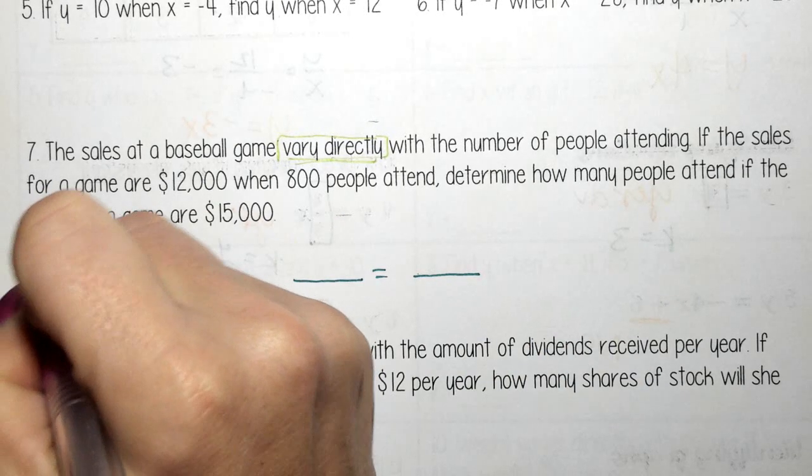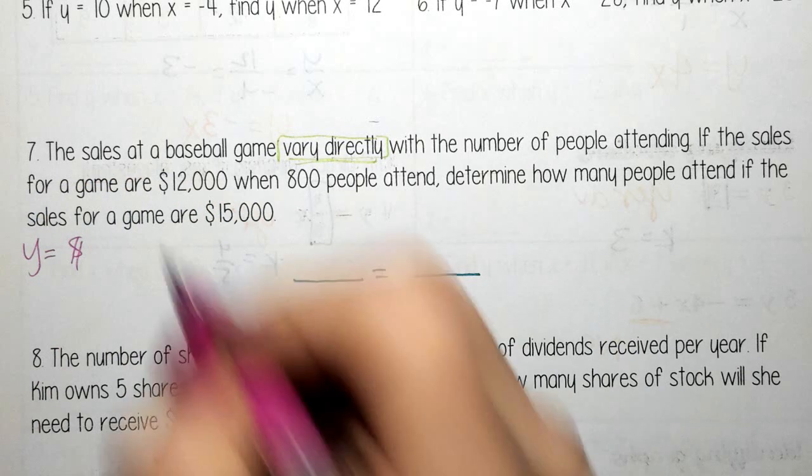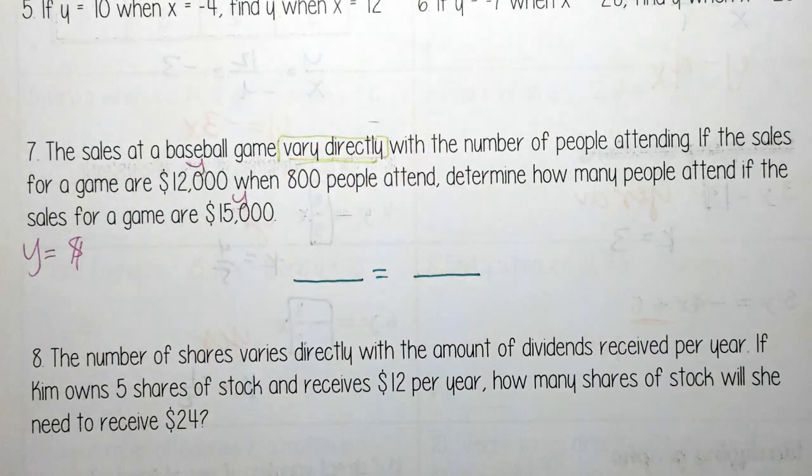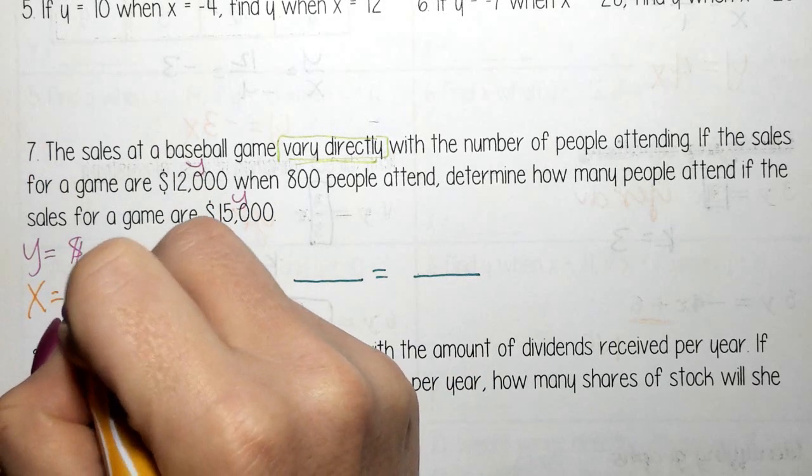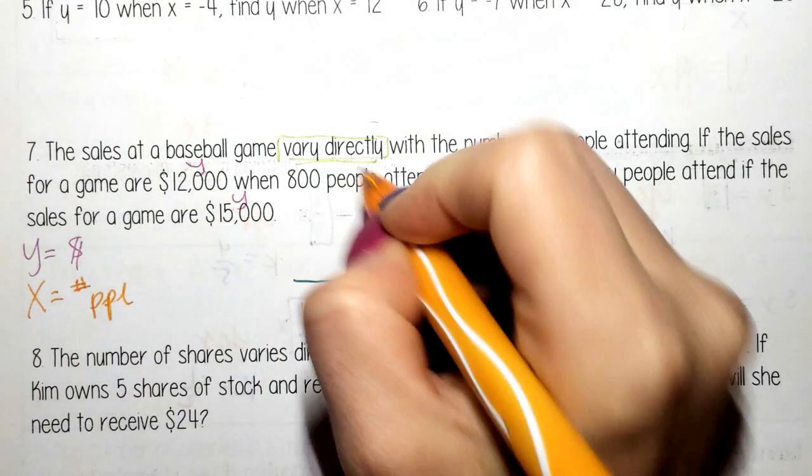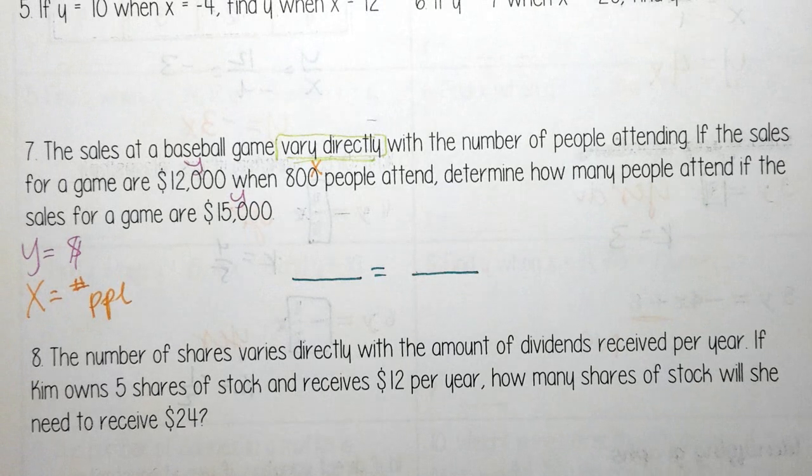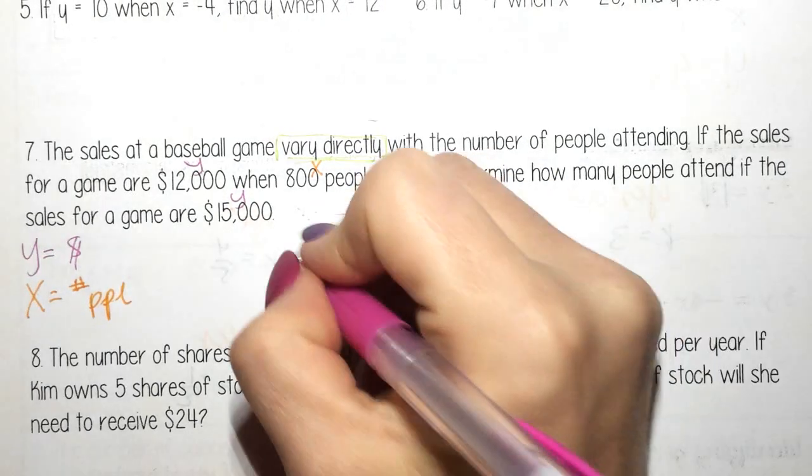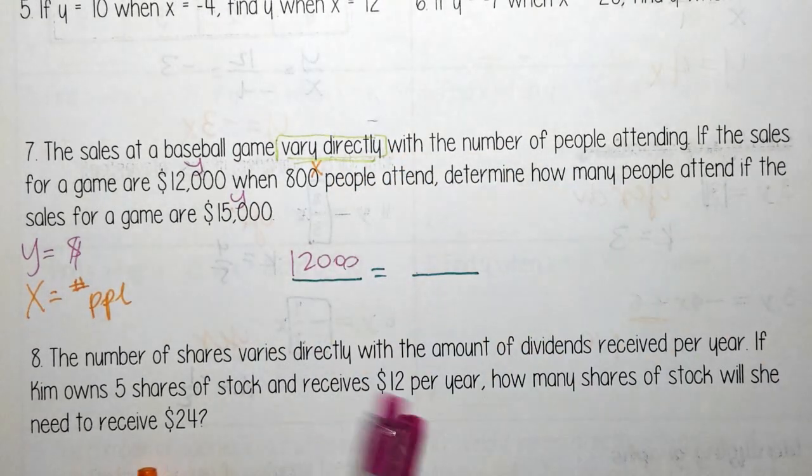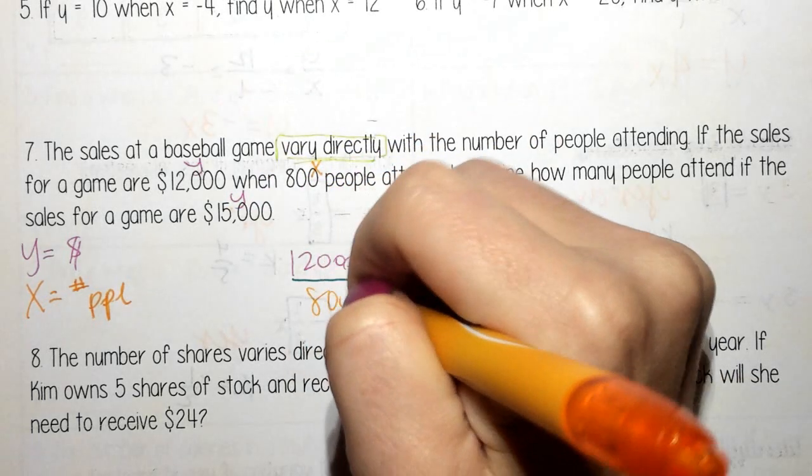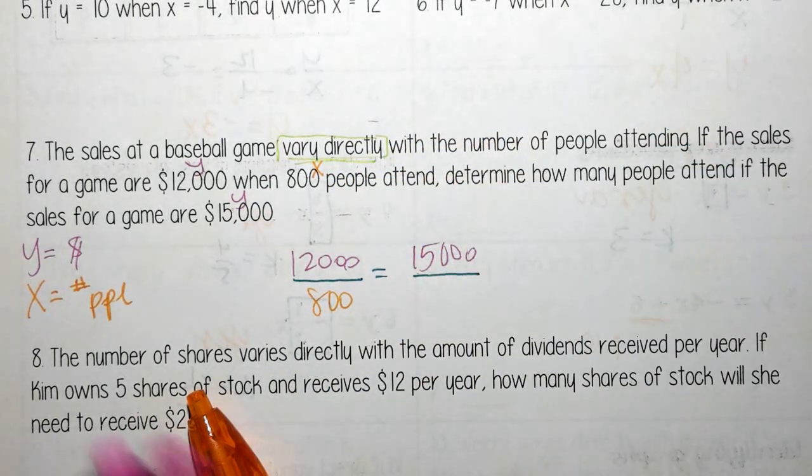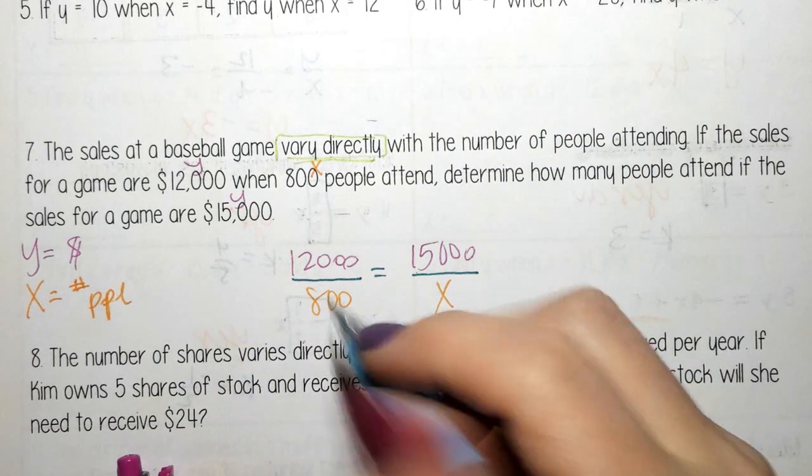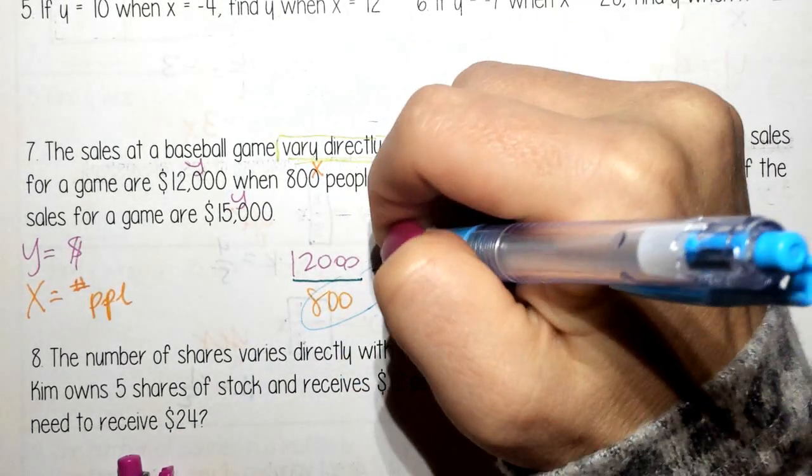So y is how much money we make. So here's my first y. Here's my second y. My x is the number of people. Honestly, it doesn't matter which one is y and which one is x as long as you keep your proportions set up properly. So we get $12,000 over 800 equals $15,000 over x. And we're trying to figure out how many people this would be.